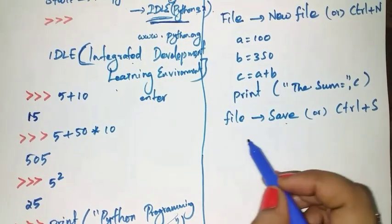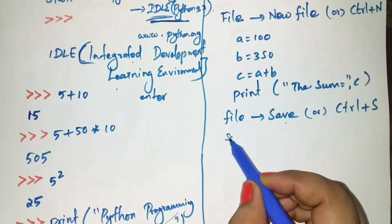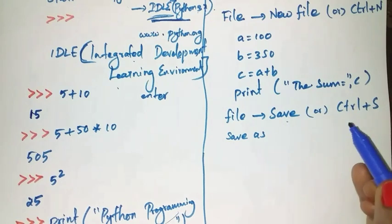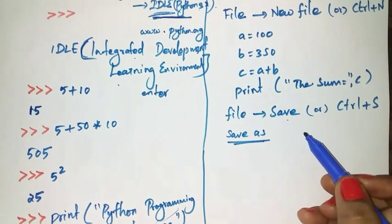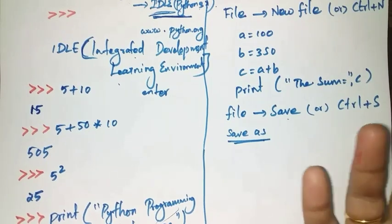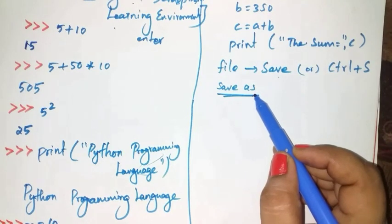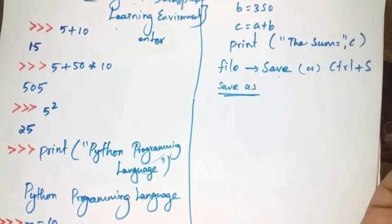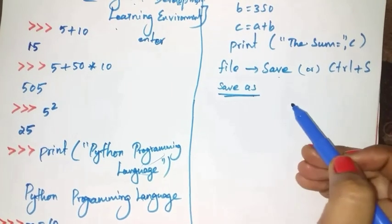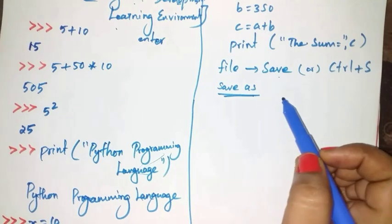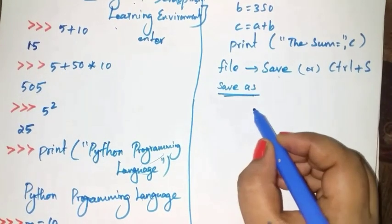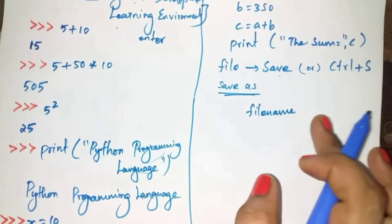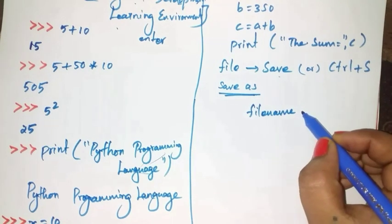After typing your code, save it by choosing File menu and selecting Save option, or press the keyboard shortcut Ctrl+S. A Save As dialog box appears. In that dialog box, select the location where you want to save your Python code — select a disk drive such as D or E. Then type the file name in the file name box. You can give any name to your code.